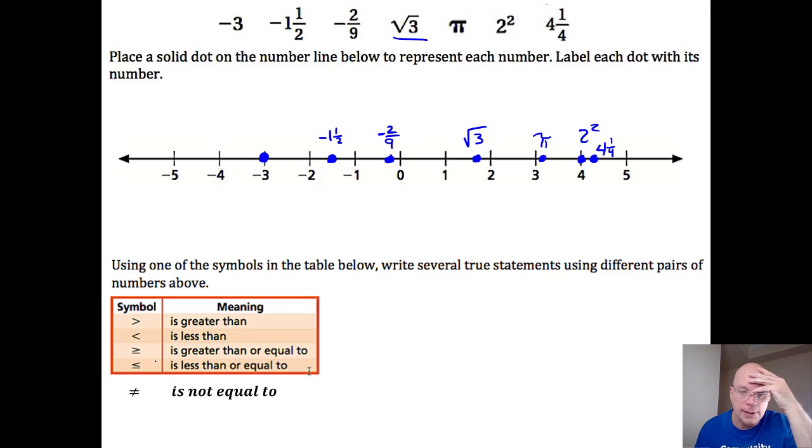So I'm assuming on the last Nearpod slide you saw all of this, and maybe you've tried this on your own already. Okay, here's what I mean. If I were to write an inequality using some of these numbers that we plotted and one of these symbols, here's one. Negative three is less than the square root of three. Negative three is to the left of the square root of three on the number line, so it's less than the square root of three.